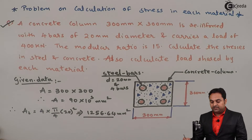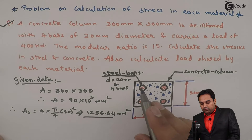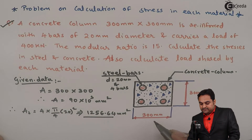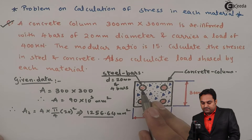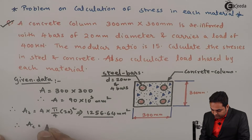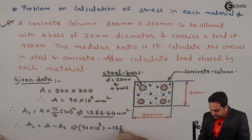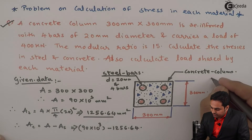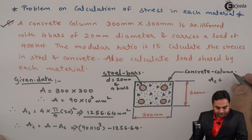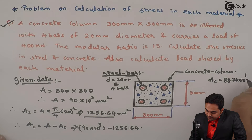Now I want to calculate the area of concrete. That area of concrete equals the total area minus the area of steel. Therefore, area of concrete = 90 × 10³ − 1256.64, which comes out to be 88.74 × 10³ mm².